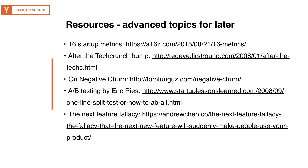For people who were slightly bored because I went over the basics, here are some advanced topics for later. My favorite is 'The Next Feature Fallacy' by Andrew Chen — this idea that we always think the next thing we make will change the trajectory of the company. I'd really recommend reading that article. These are just people worth following and reading about who can give you more ideas. Thank you.